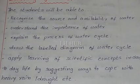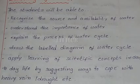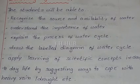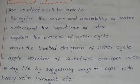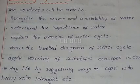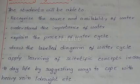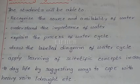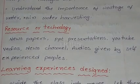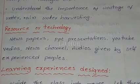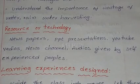Learning objectives: the student will be able to recognize the source and availability of water; understand the importance of water; explain the process of the water cycle; draw the labeled diagram of the water cycle; and apply learning of scientific concepts in day-to-day life by suggesting ways of coping with heavy rain or droughts.